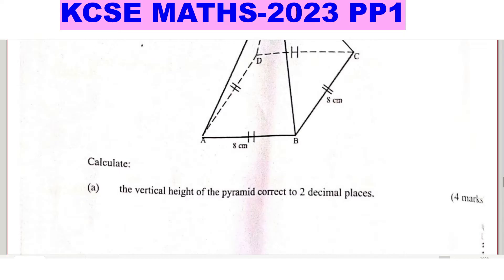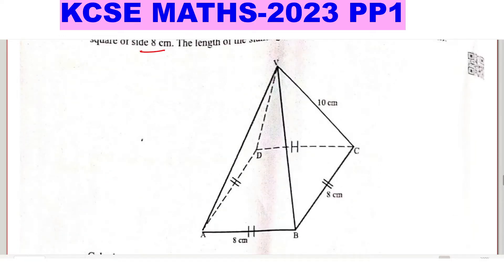First question: calculate the vertical height of the pyramid, correct to two decimal places. To get the vertical height, we shall first draw a straight line from A to C, and then create the center — the midpoint of AC — which we can call point O. It is from this midpoint that we shall create the height.